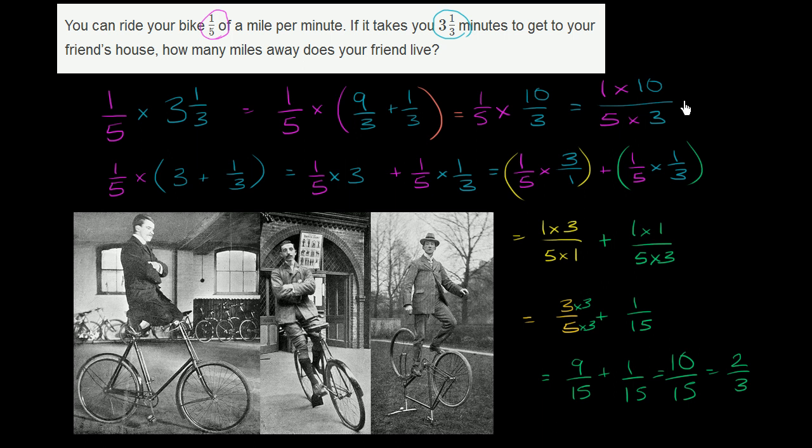which is exactly equal to what we just got. 1 times 10 is equal to 10, 5 times 3 is 15, 10 fifteenths, we already established, is the same thing as 2 thirds. So your friend lives 2 thirds of a mile away from you.